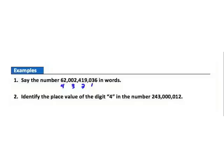Example two: identify the place value of the digit four in this large number. Here's our digit four — it is in the millions period, and specifically in the tens place of the millions period. So that digit four is in the ten millions place.